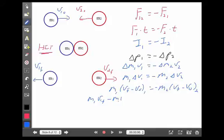Here, I have m1 v1 final minus m1 v1 initial. Over here, I have negative m2 v2 final. Negative times negative is positive, so this gives me plus m2 v2 initial.